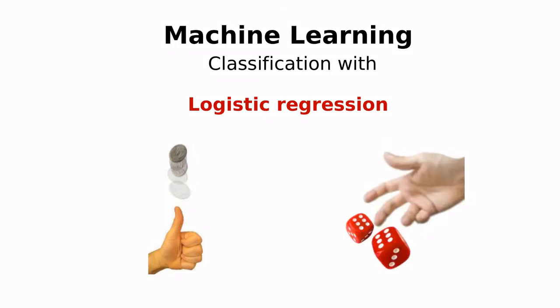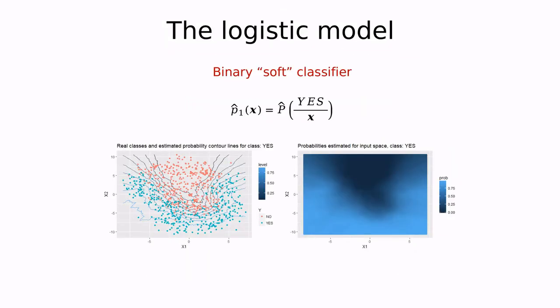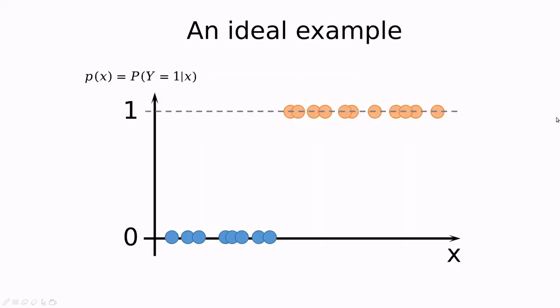Our next algorithm in this series is called logistic regression. This is one of the most popular binary classifiers, and basically it tries to classify different categories according to a probability rule. Let me show you an example.